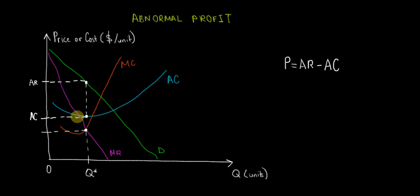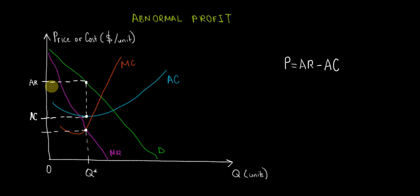For the quantity being sold on the market, we have a difference between AR and AC — the difference between the price customers pay and the average cost of producing those goods. That difference is the profit per unit, and when we multiply it by the total number of units sold at the profit-maximizing output, we get the abnormal profit — which is in fact the positive economic profit, since costs here include opportunity costs.